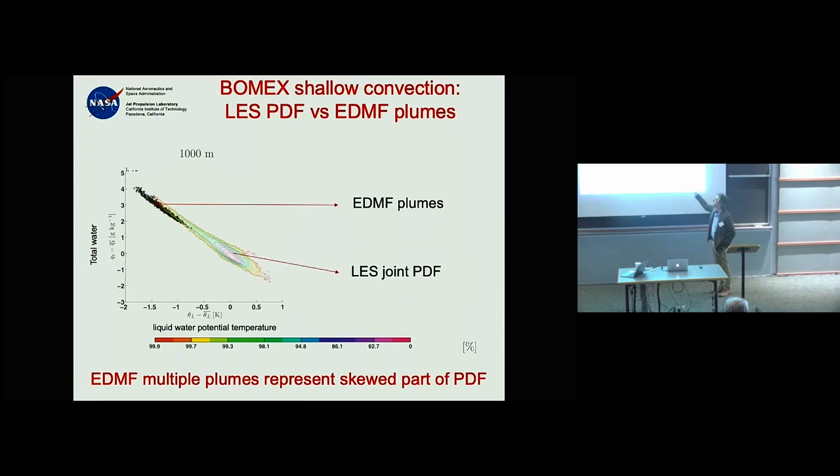This shows that the discrete model we use to represent convection is actually able to capture the highly skewed part of the distribution. The multiple plumes match what the LES shows for the active convective regions.